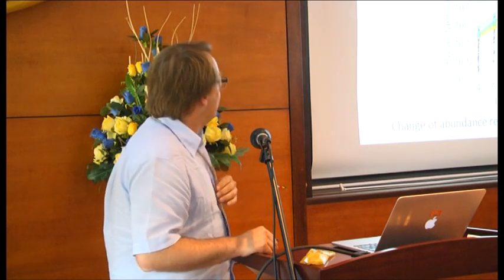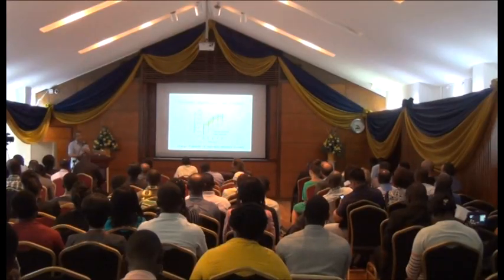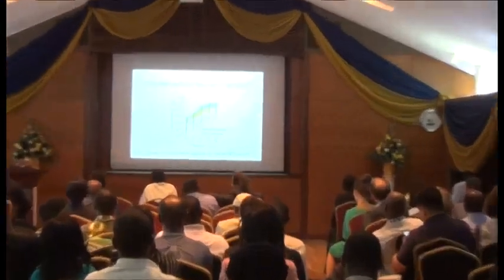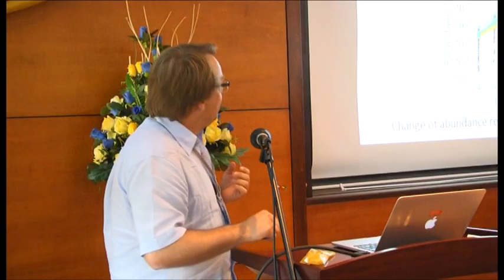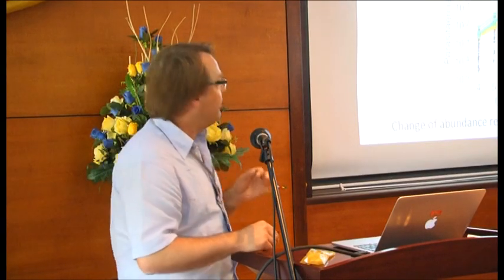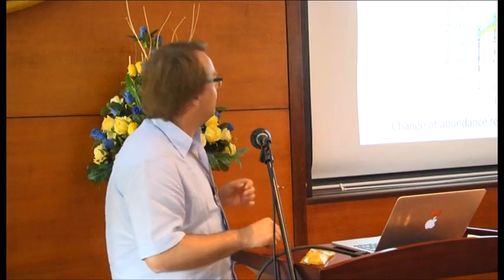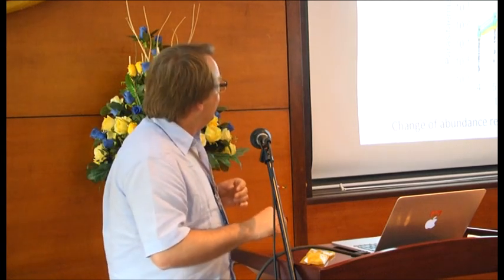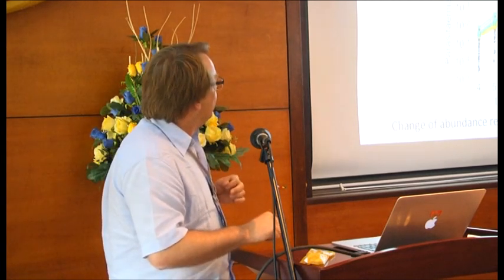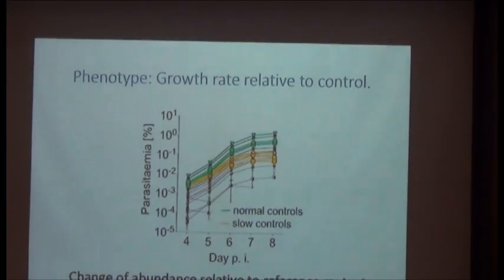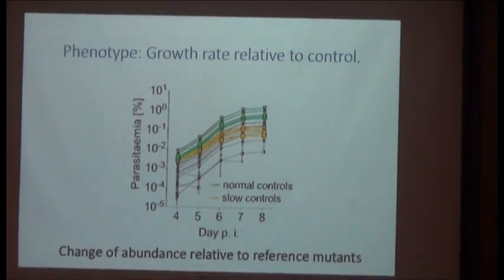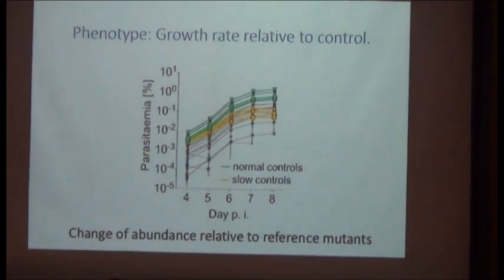Of course, you might wonder how we do that — on a blood film, all these mutants would look the same. So how can we actually measure the abundance of each mutant independently on a given day? For that we use a trick: we have included in each vector a unique barcode sequence that allows us to distinguish and quantify each mutant.